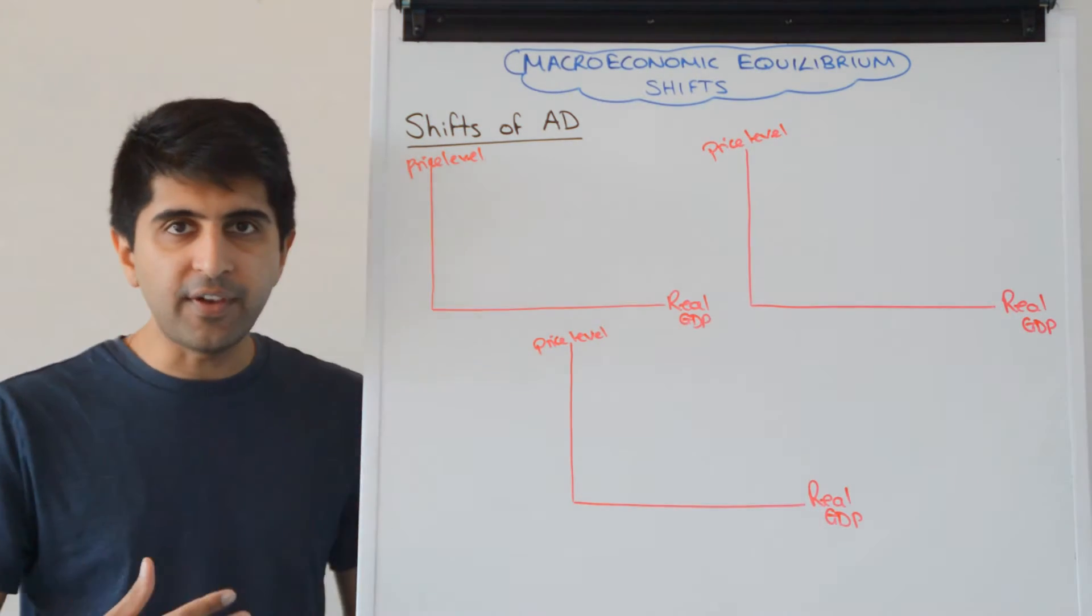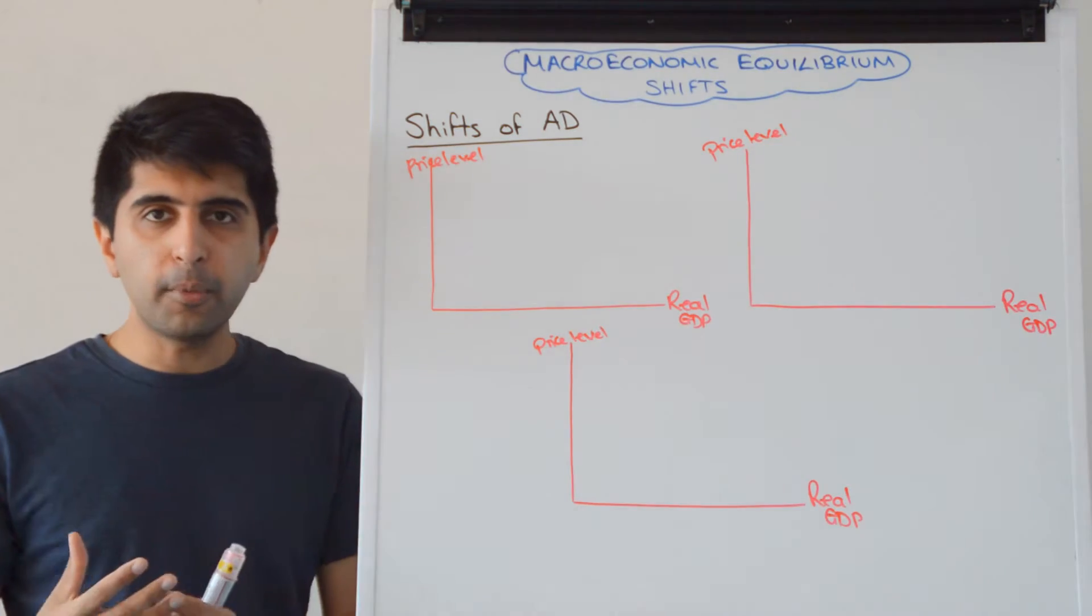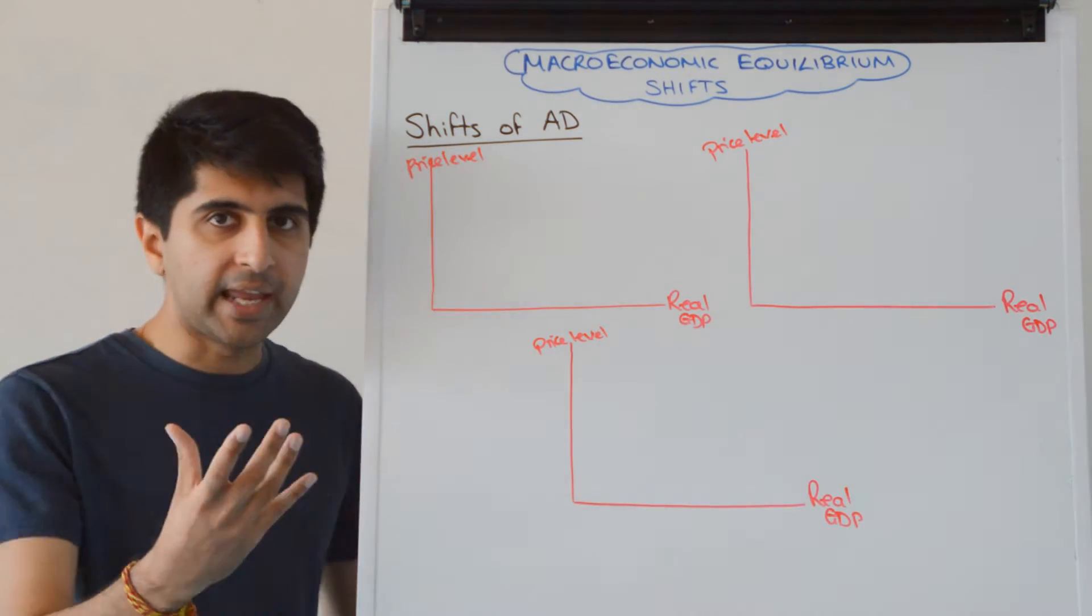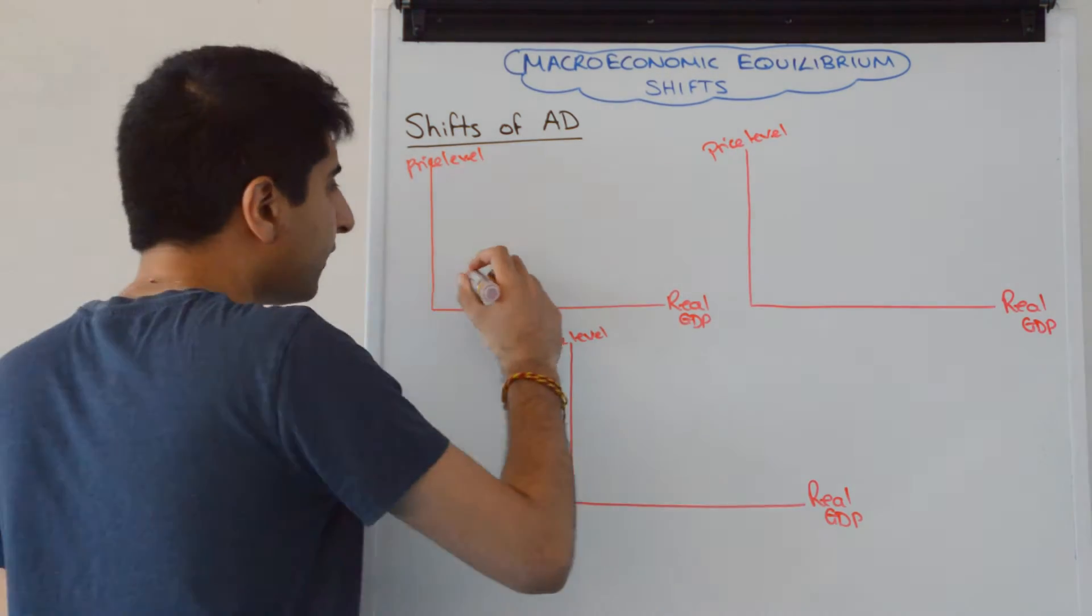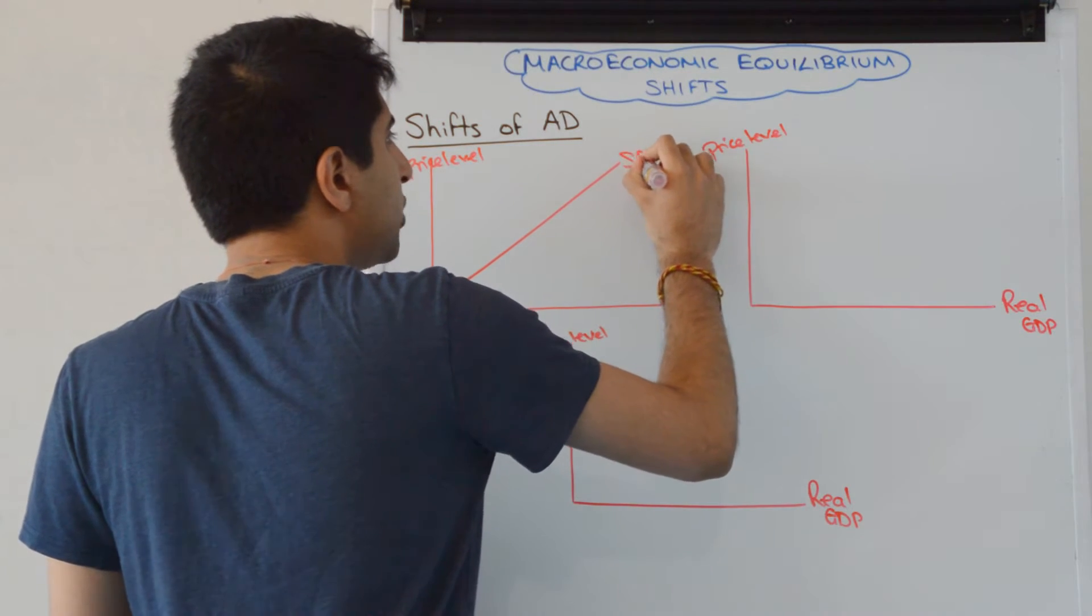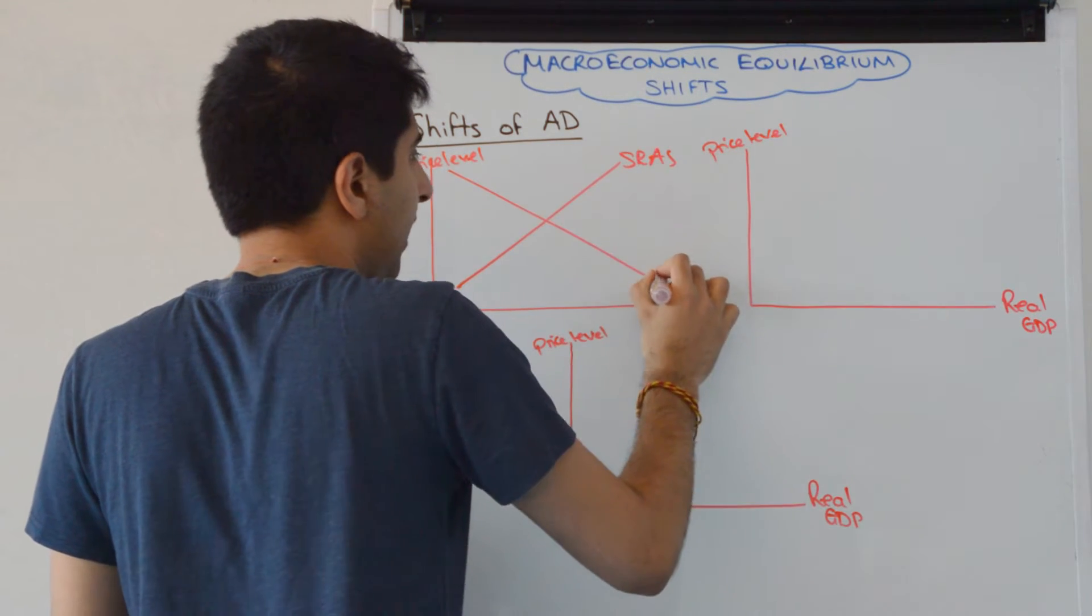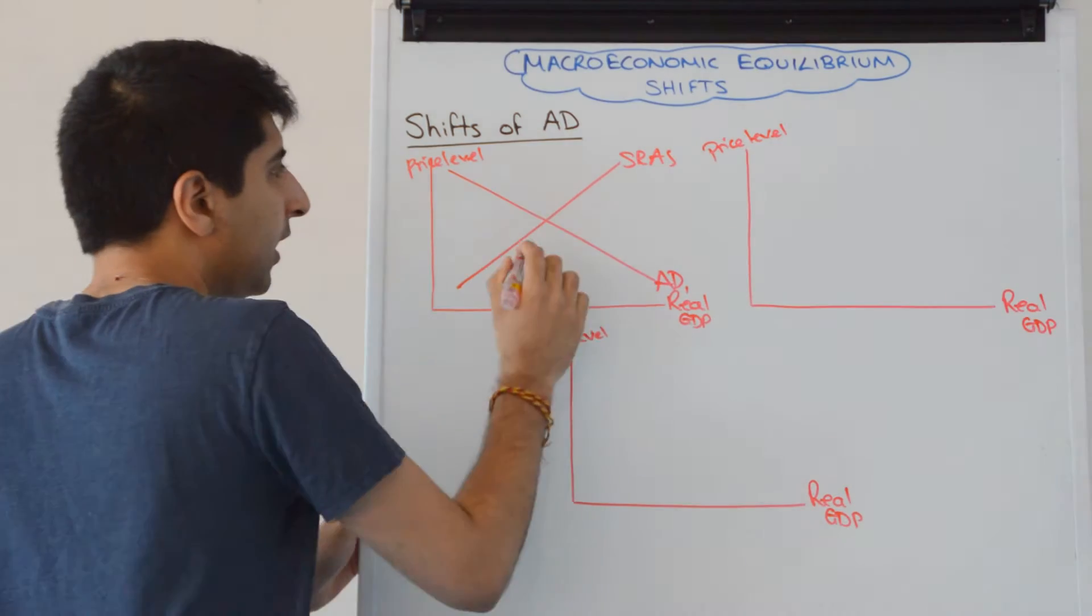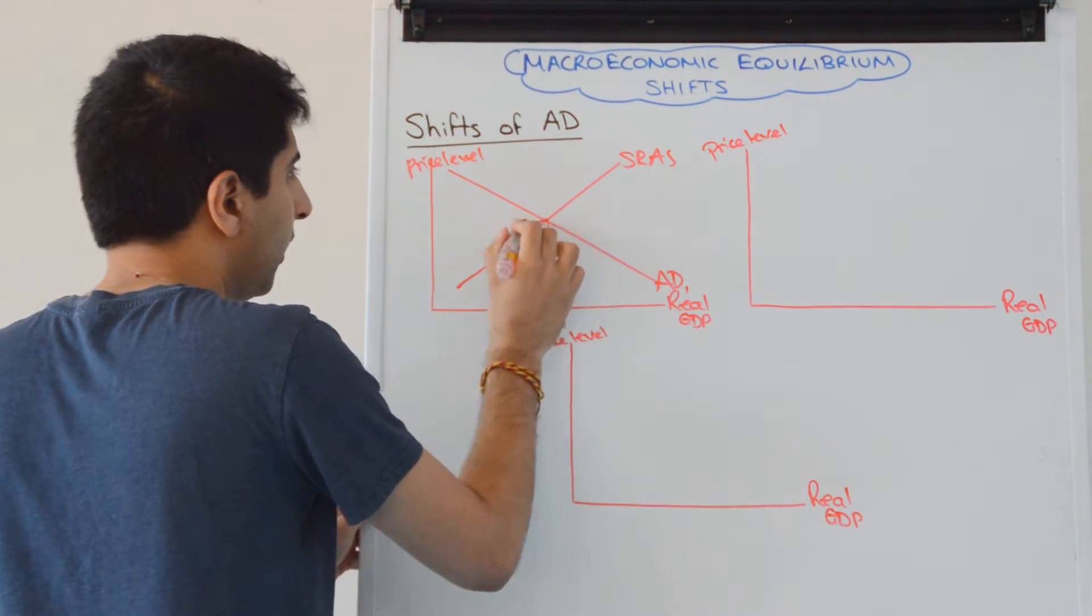Let's look at a shift of AD first. There are two ways of using the classical model to shift AD, and then we'll look at the Keynesian interpretation. Let's start simple with the classical model, and just have SRAS and AD. So there we are, equilibrium is here at Y1 and P1.